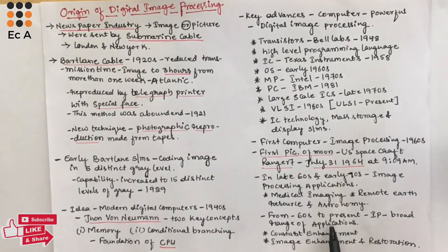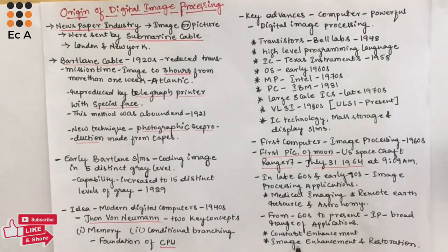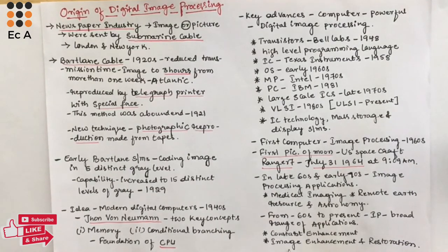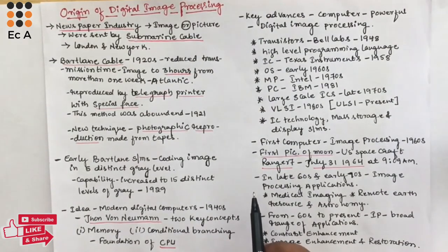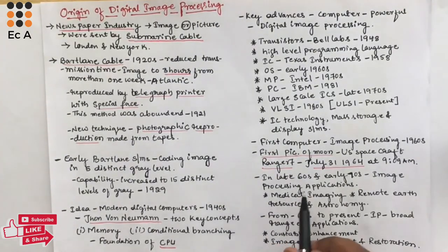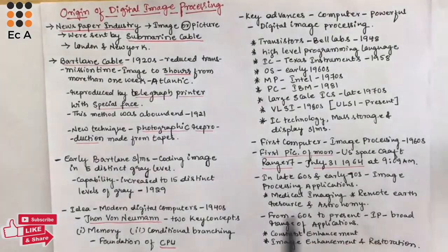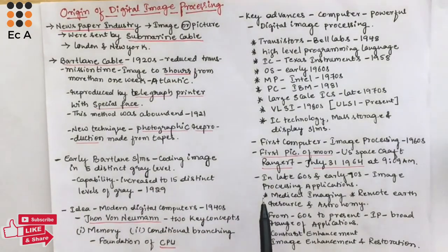From the 1960s to the present, image processing has been used in a broad range of applications like contrast enhancement — also known as coding intensity into color — used in X-ray industrial applications, medicine, and biological sciences. Another important application is image enhancement and restoration, used to reproduce degraded images. The continued reduction in the price of computers, improvement in their performance, and the internet have created large opportunities for the growth of digital image processing. This concludes the topic of the origin of digital image processing.